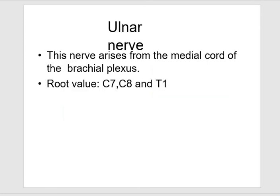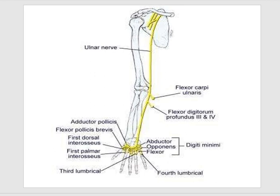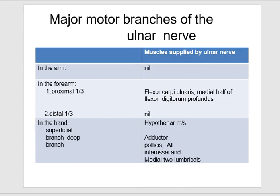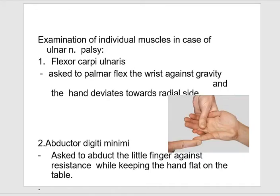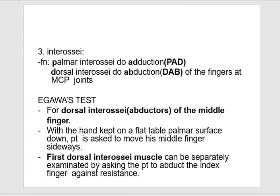The ulnar nerve arises from the medial cord of the brachial plexus, root values C7, C8, and T1. Examination of individual muscles is important. Flexor carpi ulnaris: ask the patient to flex the wrist against gravity — the hand deviates to the radial side. Abductor digiti minimi: ask the patient to abduct the little finger against resistance while keeping the hand flat. Interossei: palmar interossei do adduction (PAD), dorsal interossei do abduction (DAB).